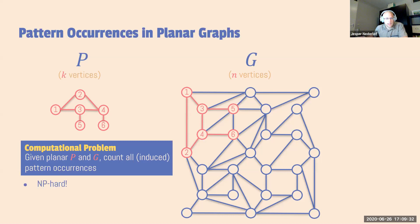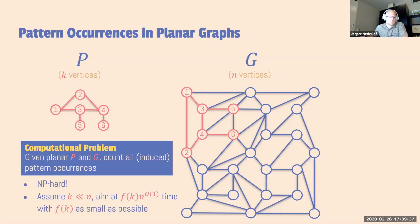This is an NP-hard problem, so we expect some exponential running time. We assume K is much smaller than N and aim for running time F(K) times poly N, trying to make F(K) as small as possible. It will be exponential, but we can try to make it a smaller exponential.